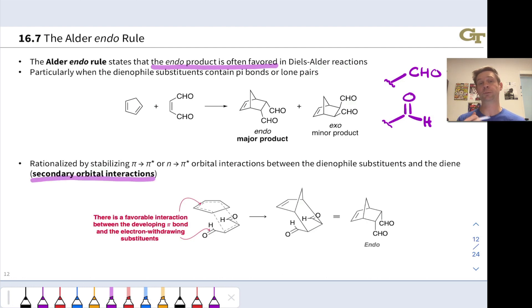These are known as secondary orbital interactions because they're not directly related to formation of the sigma bonds in this step. They happen between the substituent pi orbitals and the inner pi orbitals of the diene. To show you what I mean by that, the slide highlights a favorable interaction between the two and three carbons of the diene, these inner carbons that actually don't form the new sigma bonds, and any pi orbitals on the substituents.